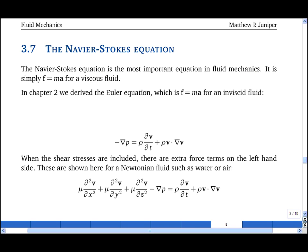The Navier-Stokes equation is F equals mA for a viscous fluid. In Chapter 2 we looked at an inviscid fluid and derived F equals mA for that fluid, which is the Euler equation.